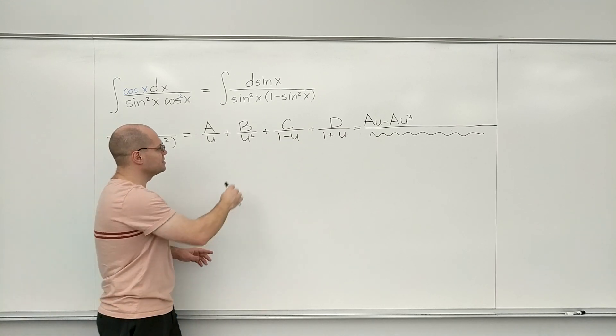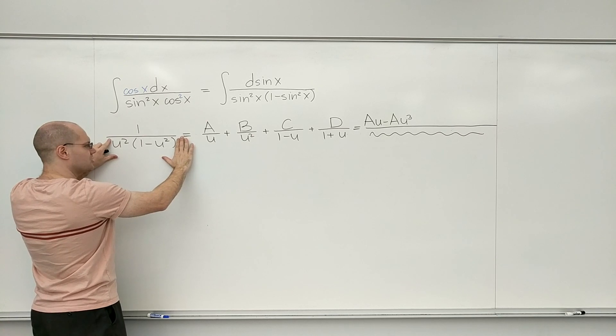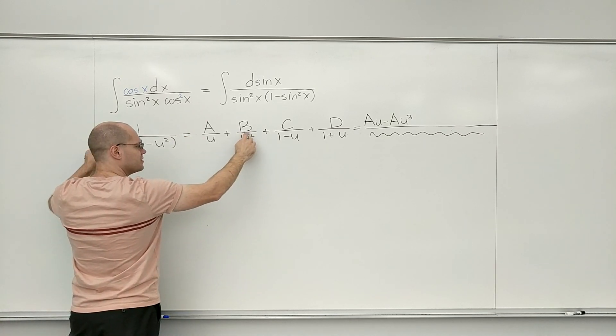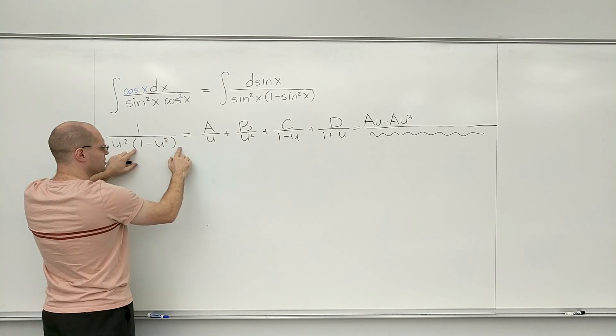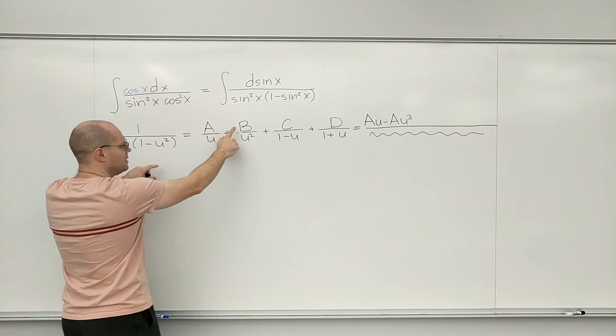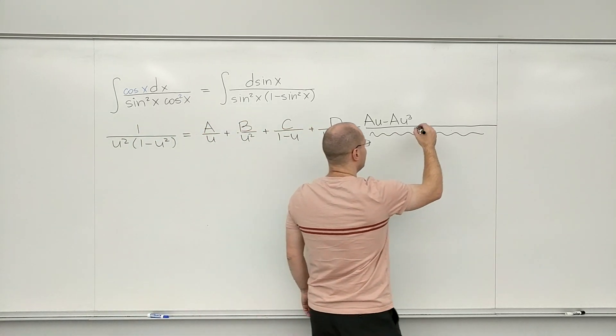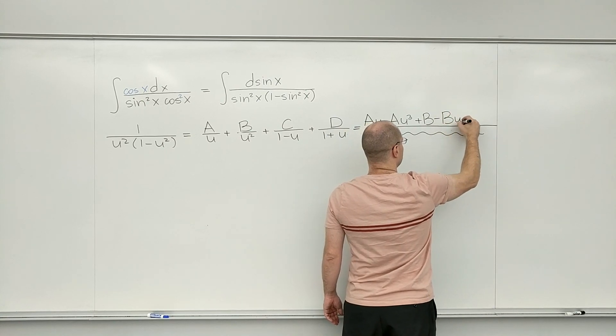Now, when I look at what multiplies B, the only question is, what factors are missing here from this? And we already have u squared, so what's missing is 1 minus u squared. So B will get multiplied by 1 minus u squared, so it's going to be plus B minus B u squared.